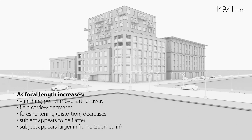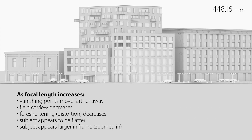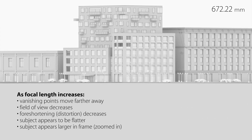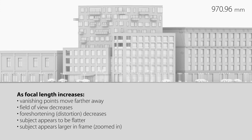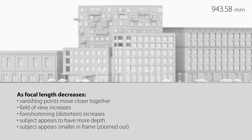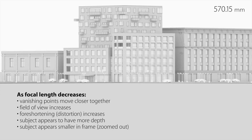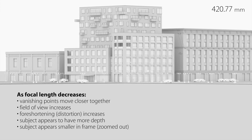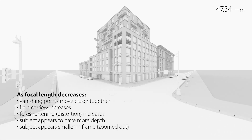In summary: as the focal length increases, vanishing points move farther away, field of view decreases, foreshortening and distortion decrease, the subject appears flatter, and the subject appears larger in frame and more zoomed in — so you have to stand back. Likewise, as the focal length decreases, vanishing points move closer together, field of view increases, foreshortening and distortion increase, the subject has more depth, and the subject appears smaller in frame, so you physically have to get closer to the subject to fill the frame.